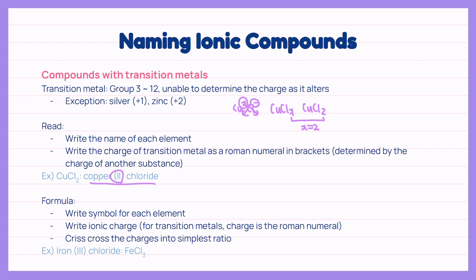Writing the formula is the exact opposite of this. We write the symbol for each element with the ionic charge. Again, the charge for the transition metal is the roman numeral. Then we simply crisscross the charges into the simplest ratio. Take a look at this example of iron 3 chloride.